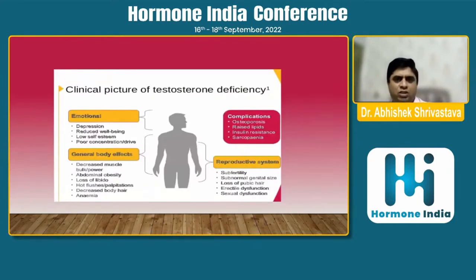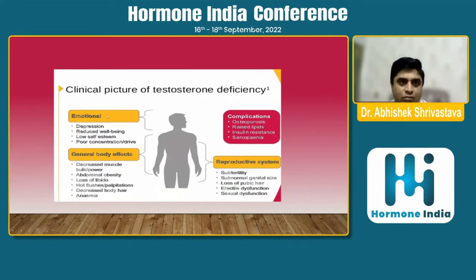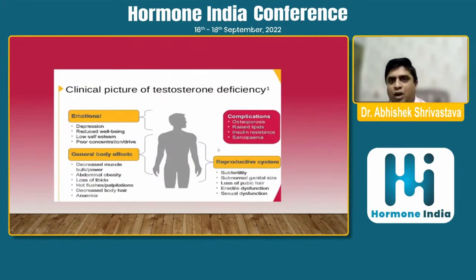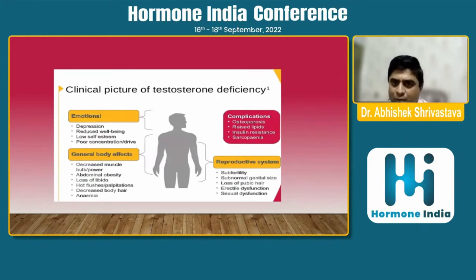The clinical picture of testosterone deficiency includes: emotionally — higher levels of depression, poor concentration, low self-esteem, and high anxiety; physically — decreased muscle mass, high levels of abdominal obesity, loss of libido, and anemia. Metabolic complications include osteoporosis, insulin resistance, and sarcopenia. Reproductive features include subnormal genital size, loss of pubic hair, erectile dysfunction, and sexual dysfunction.